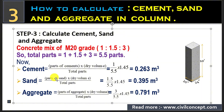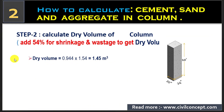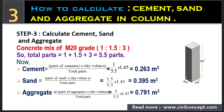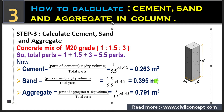Similarly, for sand: parts of sand is 1.5, multiplied by dry volume 1.54 meter cube, divided by total parts 5.5, giving us 0.395 meter cube. For aggregate: parts of aggregate is 3, multiplied by dry volume divided by total parts, and after putting all values we get 0.791 meter cube.